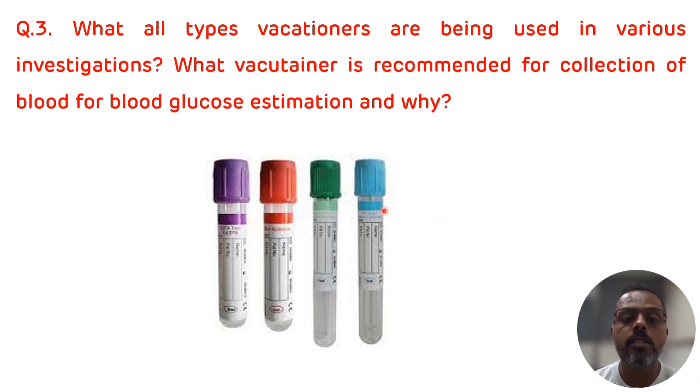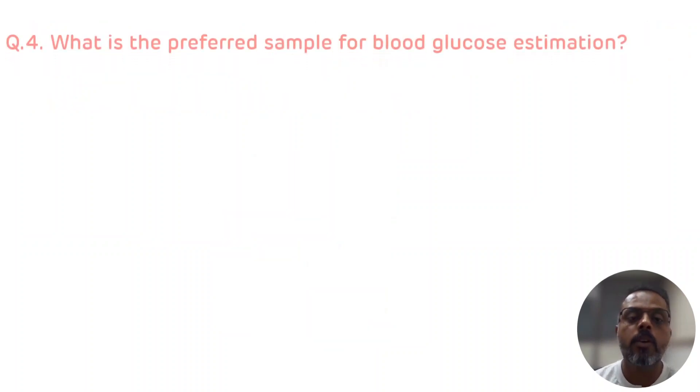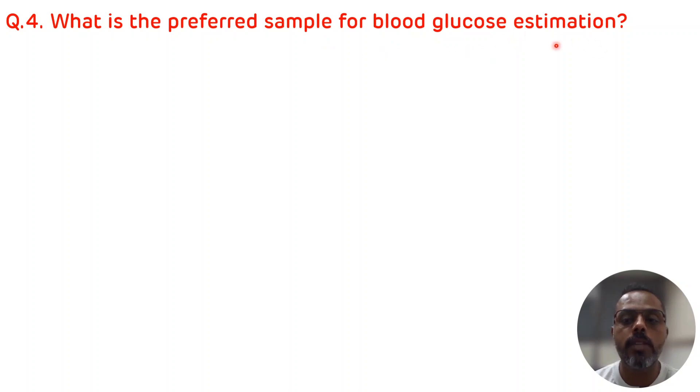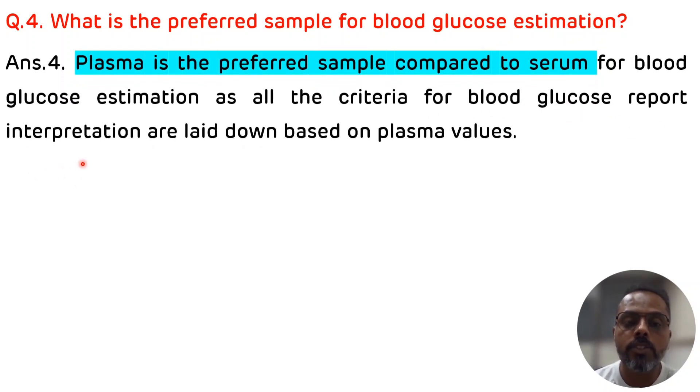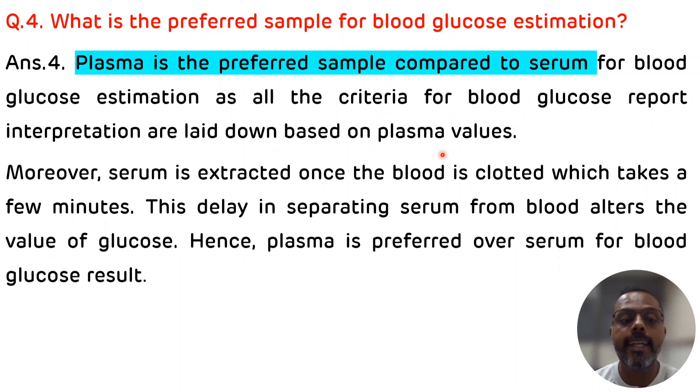Fourth question is: what is the preferred sample for blood glucose estimation? The plasma is the preferred sample for the blood glucose estimation because all the criteria for the blood glucose report interpretation are laid down based on plasma glucose value. Apart from this, serum is extracted from the blood once the blood is clotted, so it takes few minutes. This delay in separating serum from the blood alters the blood glucose value. Hence, the plasma is preferred over serum for blood glucose results.